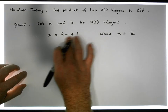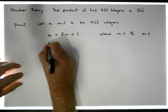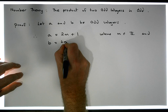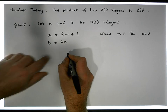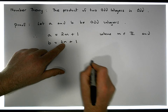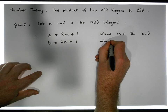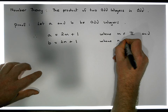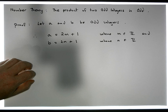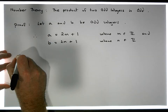We also have that b is an odd integer, so it equals two times some other integer m plus one — an even part plus one, which makes it odd — where m is an element of the integers. What we want to show is that the product of these two odd integers is in fact odd.